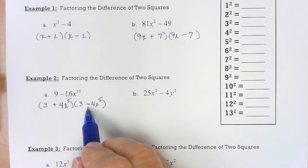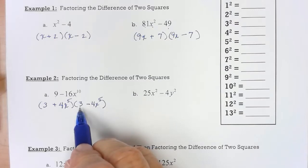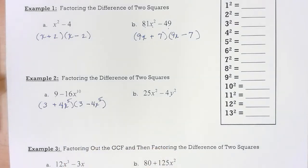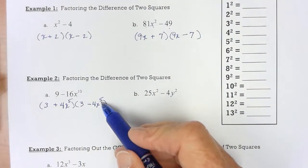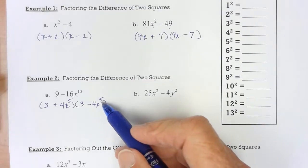Back here, I do have a difference, but the 3 is not a perfect square, so that stops it right there. Another thing that stops it is a 5. It's not evenly divisible by 2.